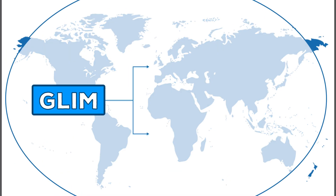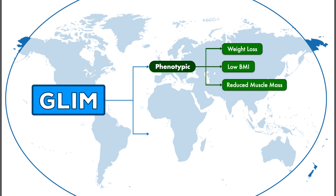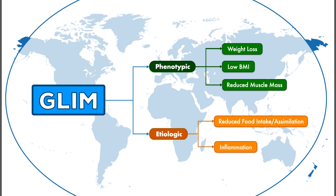The GLIM framework is based on five criteria separated into two categories. There are the phenotypic criteria, which include weight loss, low body mass index, and reduced muscle mass. And there are the etiologic criteria, which include reduced food intake or assimilation and inflammation. To diagnose malnutrition, a patient must satisfy at least one criteria from each major category.